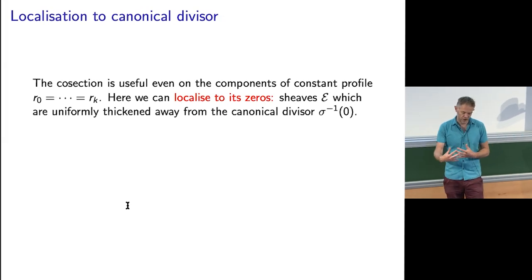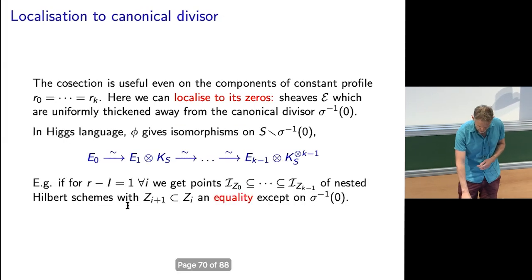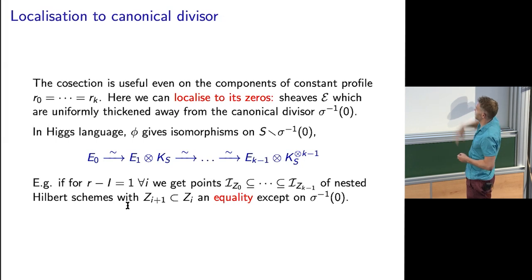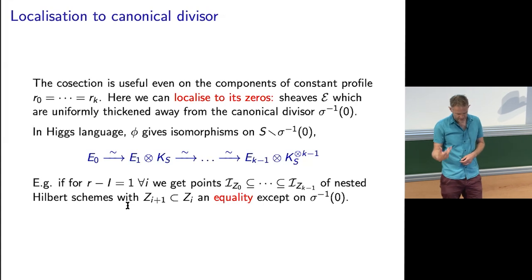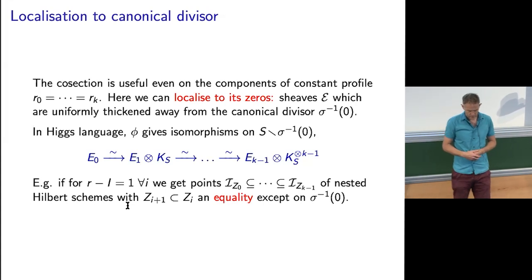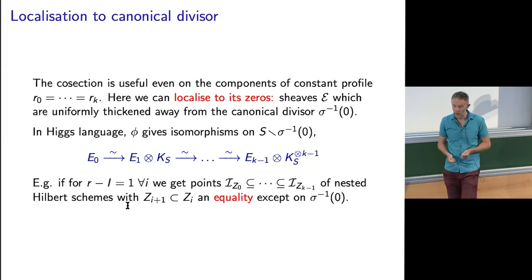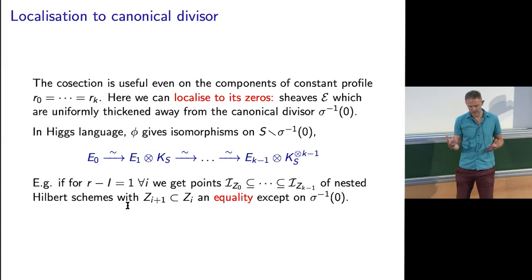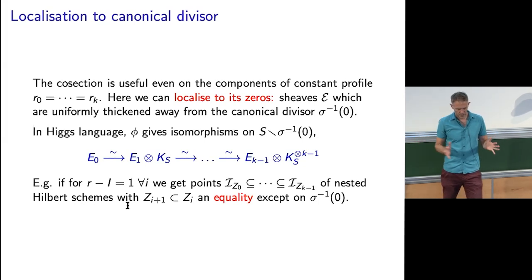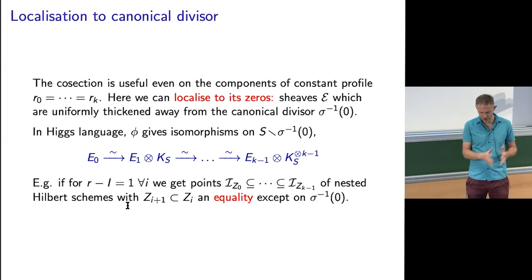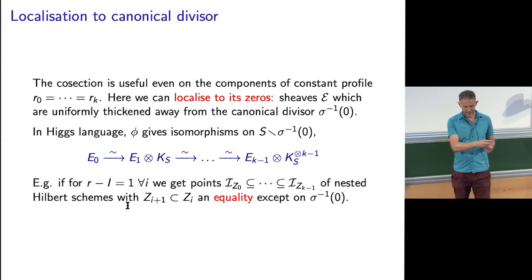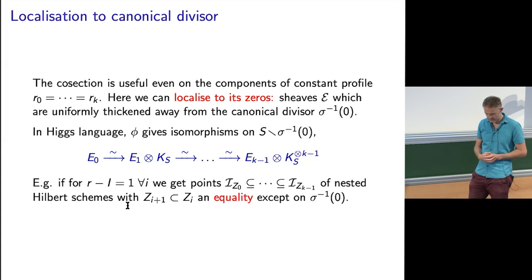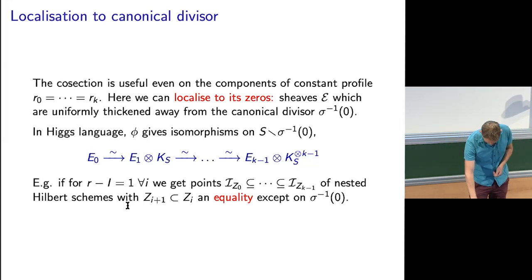What it means is you can localize the computation to the canonical curve in the surface where the holomorphic two-form vanishes. In Higgs language, away from the holomorphic two-form all these weight spaces have to be the same. If you're doing nested Hilbert schemes, there's no non-trivial nesting — the sub-schemes have to be identically the same away from this holomorphic two-form. So when Larraquis does his computations, he localizes all these nested Hilbert scheme computations and doesn't need to compute away from this canonical curve because the nested Hilbert scheme is trivial there.